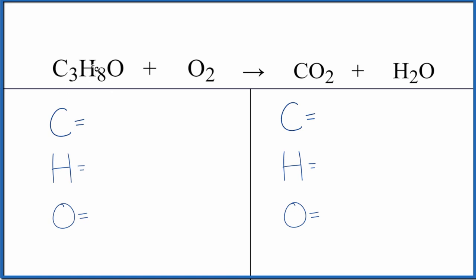When we combust or burn rubbing alcohol in air, which is made up of nitrogen gas N2, oxygen gas O2, and a few other trace gases, it's the O2 that's going to react with the isopropyl alcohol. Since it's combustion, we'll get carbon dioxide and water.